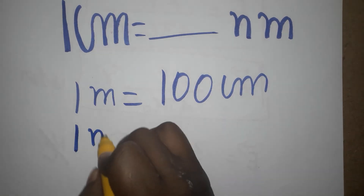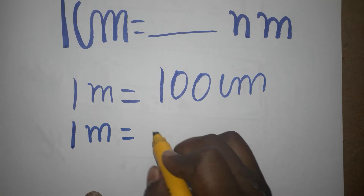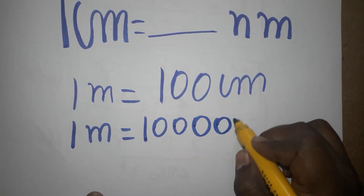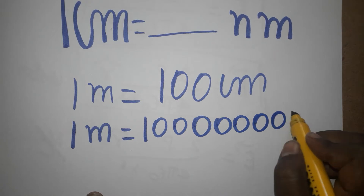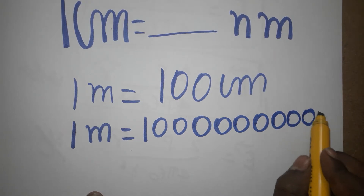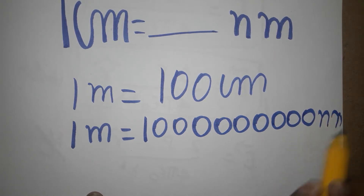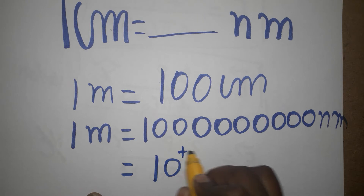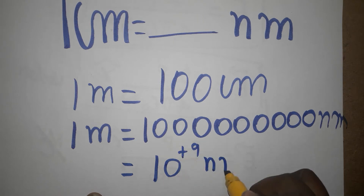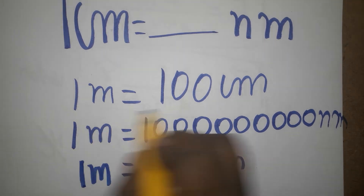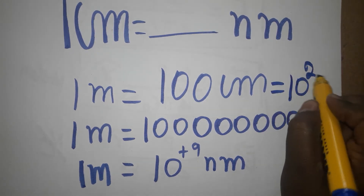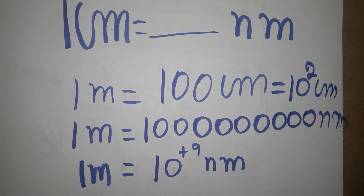Then, one meter is how many nanometers? It is 1 followed by nine zeros — that is 10 power 9 nanometers. Nanometer is a very small value. So we can write: one meter is 10 power 9 nanometers, and one meter is 10 power 2 centimeters.